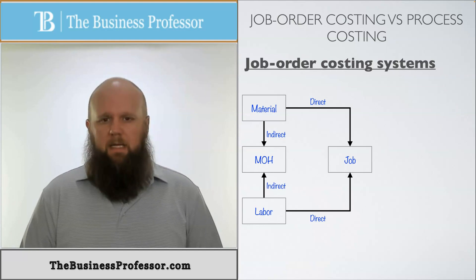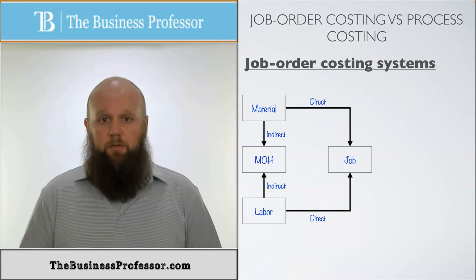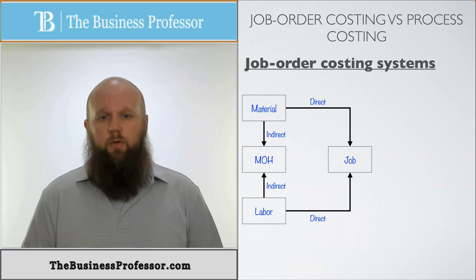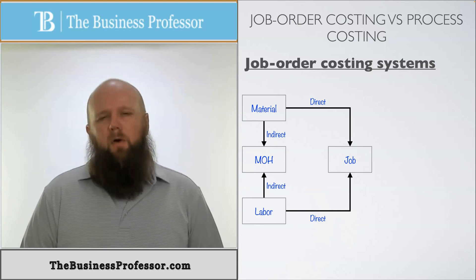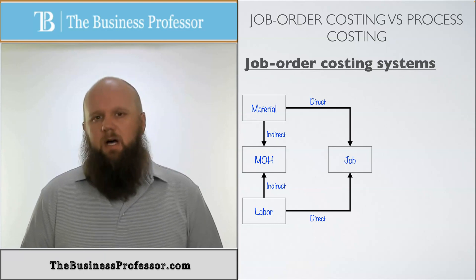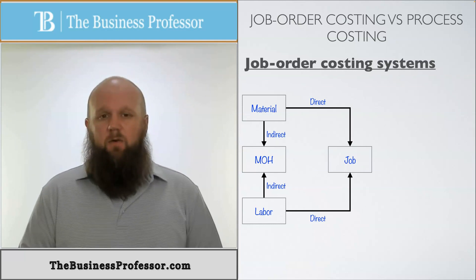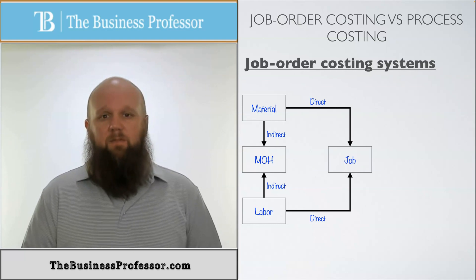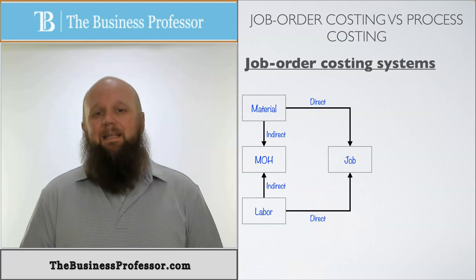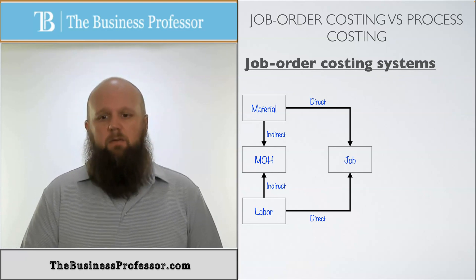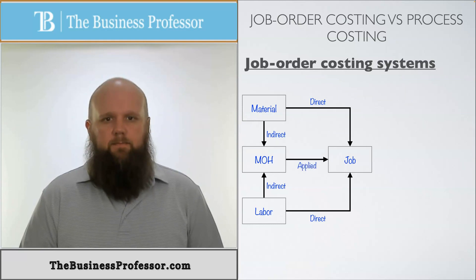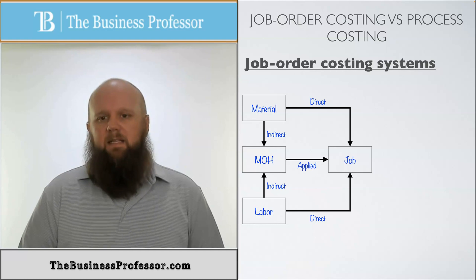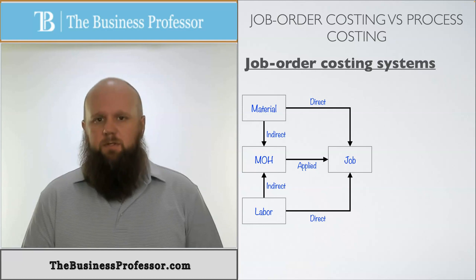Direct material and direct labor are the easiest ones to apply to a job because they're direct. They're easily and conveniently traceable to that job. Manufacturing overhead, however, is not. We don't know exactly how much cost goes into the job at the time of the start of the job, so we have to apply it to the job. We have to estimate it. The only way we can get costs from manufacturing overhead to the job in the beginning when it starts is through application or allotment. That's the main difference when it comes to indirects versus directs.